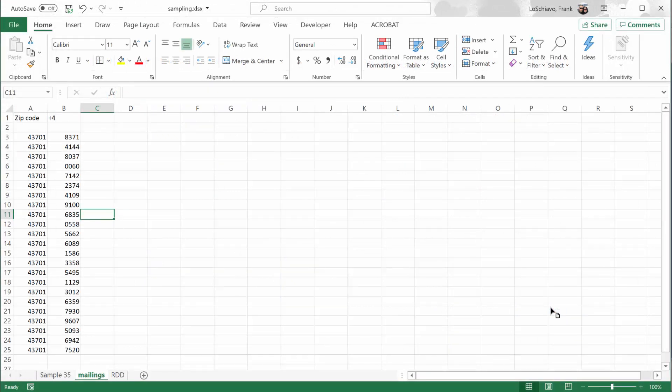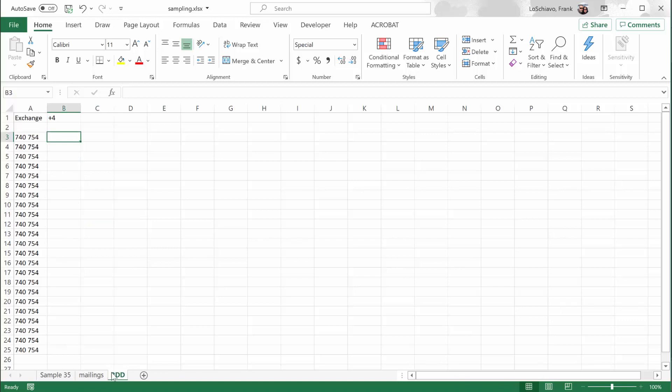We'll use a similar procedure that we used for random mailings. I'm going to click on this sheet right here. It's set up for random digit dialing.